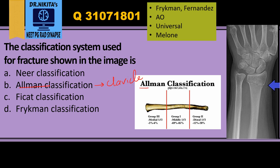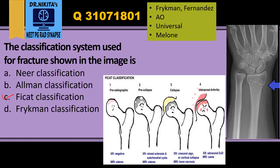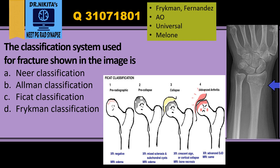Next, Allman classification is used for clavicle — 'all men have a clavicle,' so Allman's classification is for clavicle. Ficat classification is for the femur — specifically femoral head avascular necrosis. That is the Ficat and Arlet classification. So: Ficat is for femur, Allman is for clavicle.